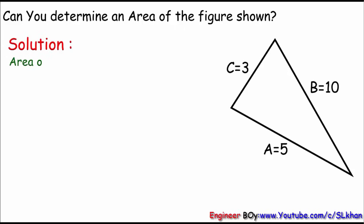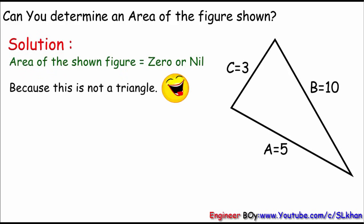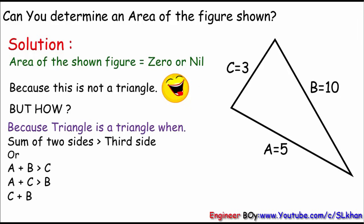You can ask me how. Because sum of two sides of the triangle must be greater than the third one, and the shown triangle does not satisfy the rule. So this is not a triangle, which means the shown thing does not have any area.